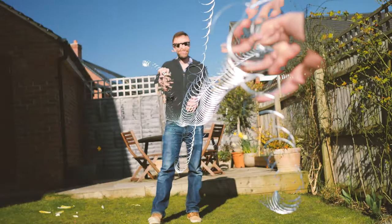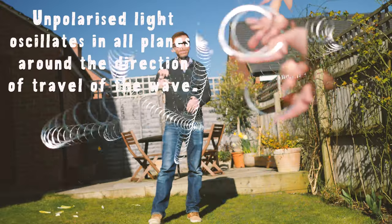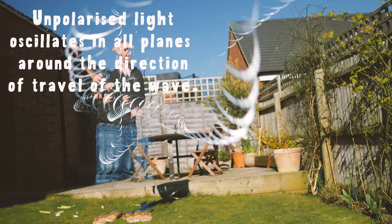So we've got a little model here to help you imagine what's going on. I've got four planes overlaid here but you have to imagine the light oscillating in all planes around that axis.